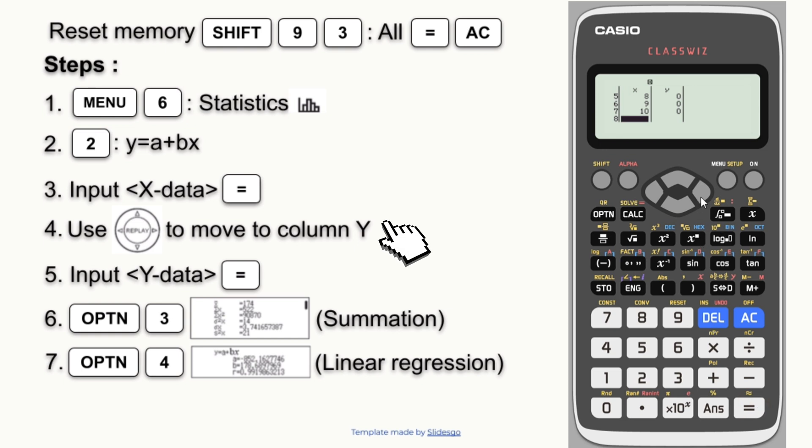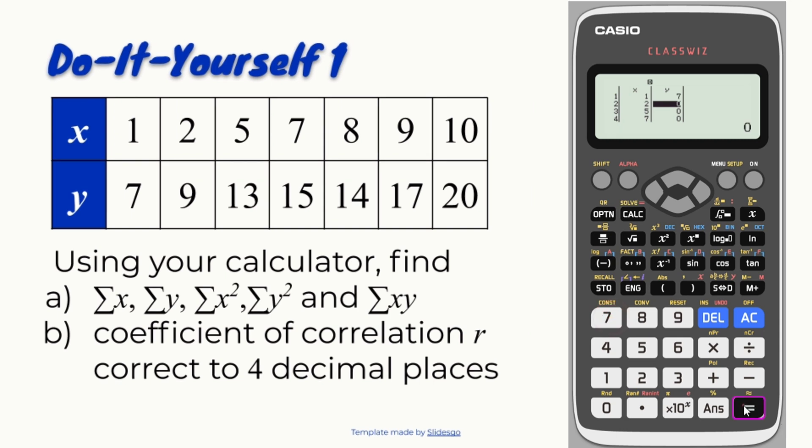The fourth step, we're going to use the cursor to move to column Y. The fifth step is to input Y data, so we're going to do the same thing as we did for the X data.